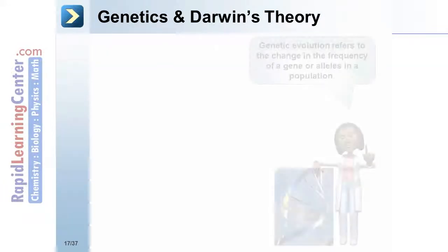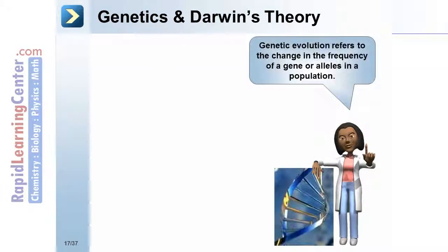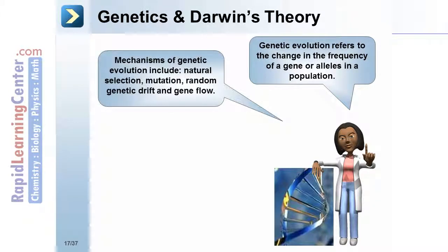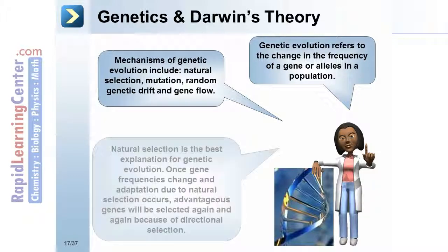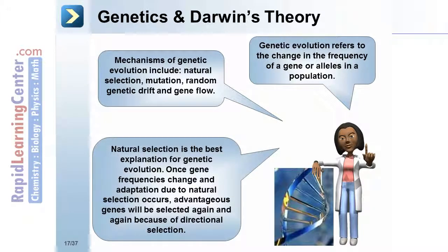Genetic evolution refers to the change in the frequency of a gene or alleles in a population. Mechanisms of genetic evolution include natural selection, mutation, random genetic drift, and gene flow. Natural selection is the best explanation for genetic evolution. Once gene frequencies change and adaptation due to natural selection occurs, advantageous genes will be selected again and again because of directional selection.